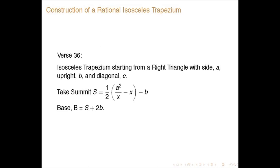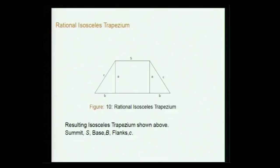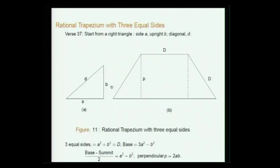For an isosceles trapezium, essentially it uses right triangles with rational sides. If you start with a right triangle with side a, upright b, and diagonal c, then you can take b to be something like half of (y²/x − x), take the summit s to be an arbitrary rational number, and the base will be s + 2b. So you have a rational isosceles trapezium where all parts are rational.